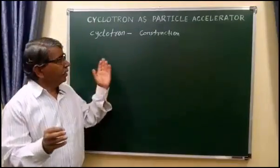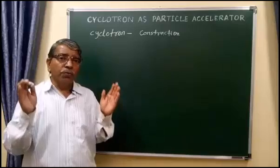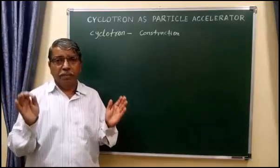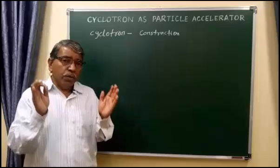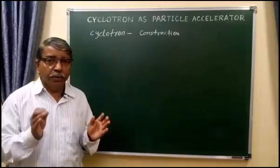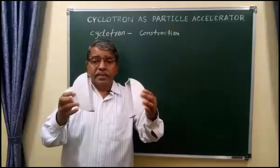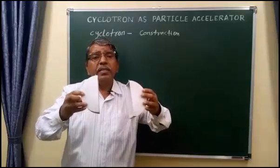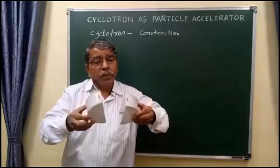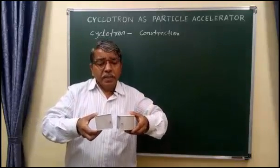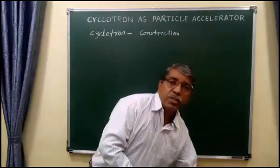Let us move to the construction of the cyclotron. In its simplest form, a cyclotron consists of two flat semi-circular metal boxes made of highly conducting material such as copper. The metal boxes look like the English capital letter D. These two D's are separated by a small gap. Let me draw the diagram for the construction of the cyclotron.